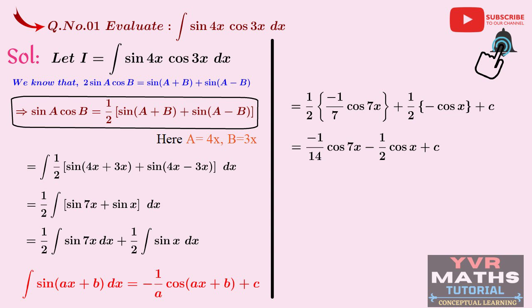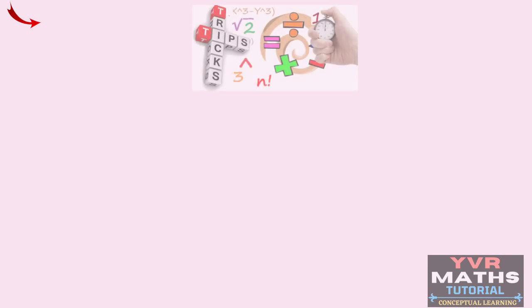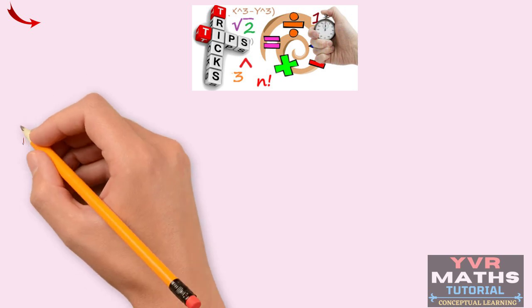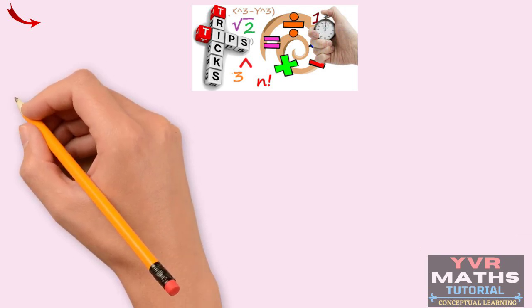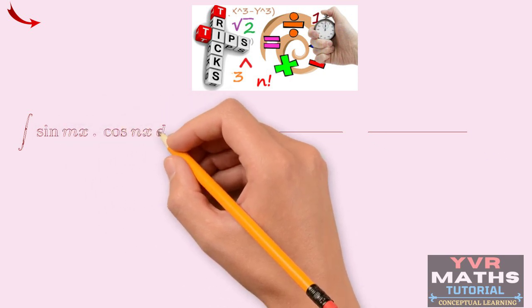So the final answer for the given integral is −(1/14)cos(7x) − (1/2)cos(x) + C. However, this process takes some time in competitive exams. To avoid this lengthy calculation, I will give a small shortcut formula: ∫sin(mx)cos(nx)dx = −(1/2)[cos((m+n)x)/(m+n) + cos((m−n)x)/(m−n)] + C.